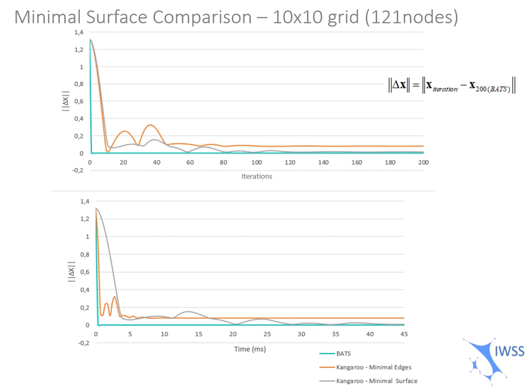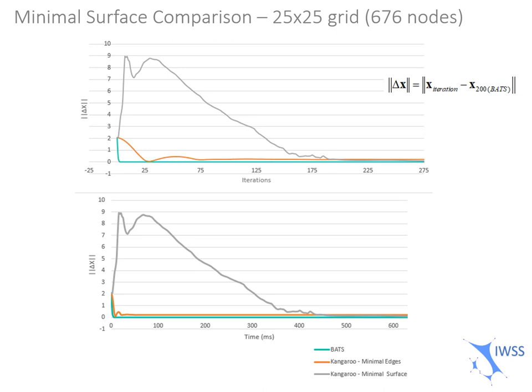As you can see, both Kangaroo methods have this pulsing effect that is particular to the system that emulates dynamic problems to find solutions. But it converts really quickly and directly in less than five iterations.